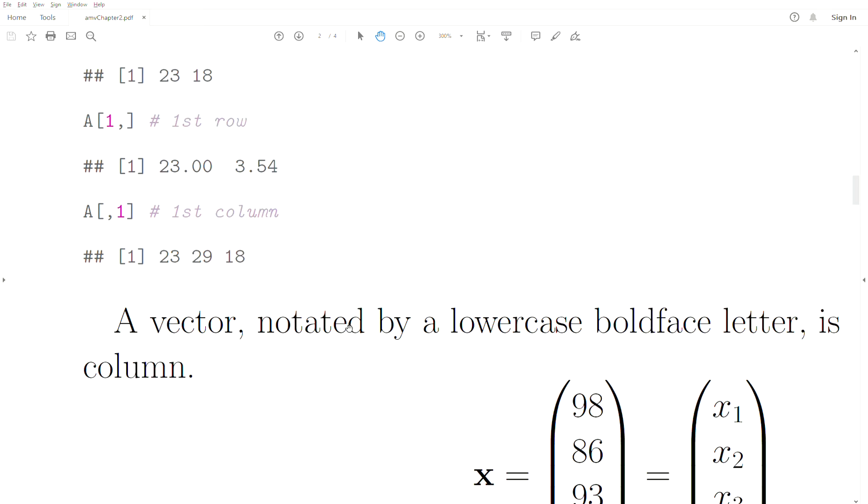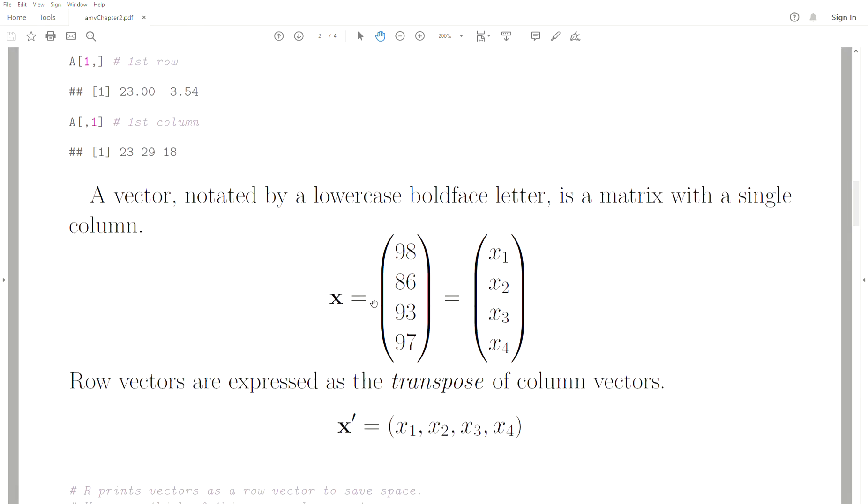A vector is denoted by a bold lowercase letter. A vector is just one column in a matrix—this is called a column vector. So 98, 86, 93, 94. This is a vector of size four. Generically, we only need one subscript because it's one dimension: X1, X2, X3, and X4.